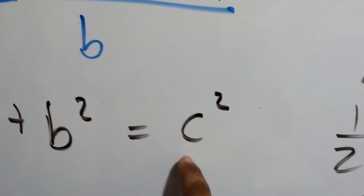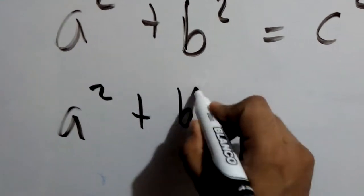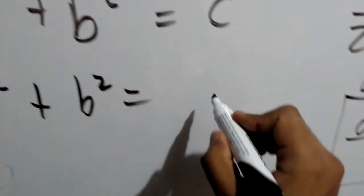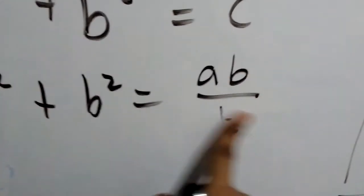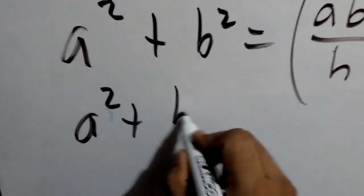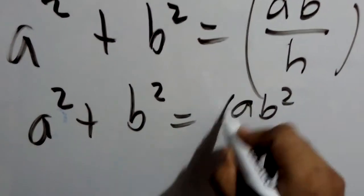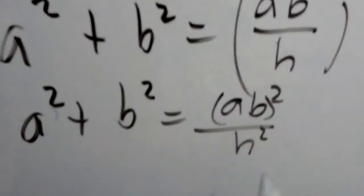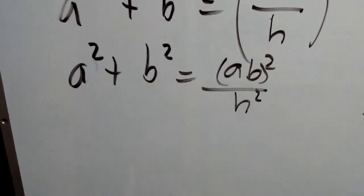So we can substitute in this c in the Pythagorean theorem. So a squared plus b squared equals, we substitute our new expression, so it's ab over h, oh my god, over h squared. Okay, now let's simplify. It's a squared plus b squared equals ab squared over h squared. A little bit weird.